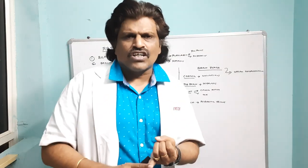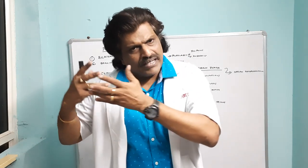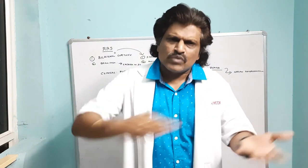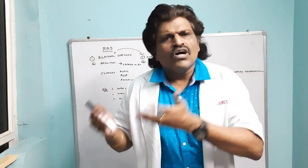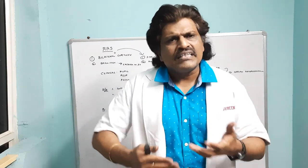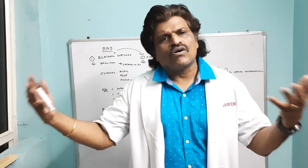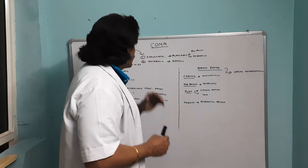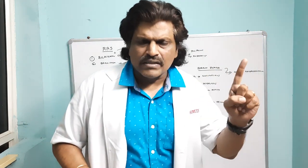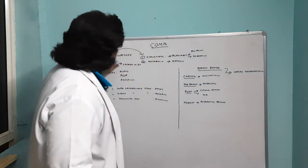A person can go into a comatose state either because of a structural cause or a metabolic cause. A structural cause means anatomical disruption of the RAS — infarction, hemorrhage, or anything disrupting the pathways. A metabolic cause means the brain is deprived of oxygen, glucose, or sodium. Hypoglycemia, hypoxemia, or hyponatremia can all cause loss of consciousness. So either a structural cause like stroke or a metabolic cause like hypoglycemia can push a person into a comatose state.